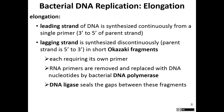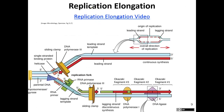Elongation occurs in a five prime to three prime direction. The leading strand is synthesized continuously on the strand where the DNA has a three prime free end. The lagging strand is synthesized discontinuously because the free three prime region is not open all the time, producing smaller fragments that each need their own RNA primer. You can also watch the elongation video to help understand this process.